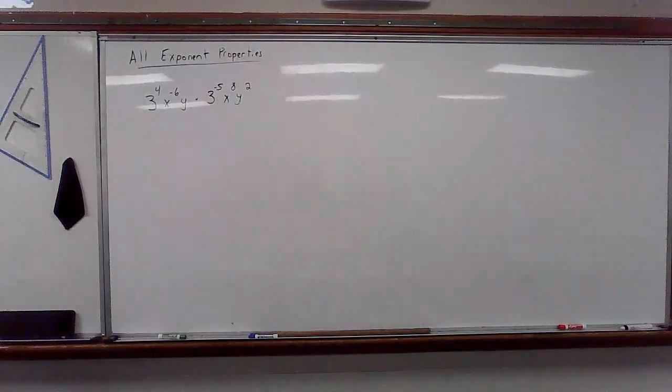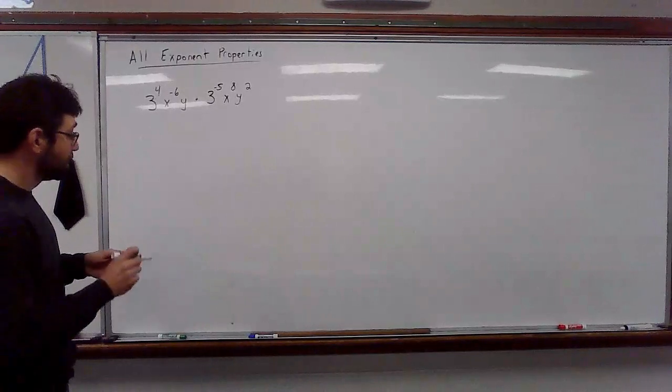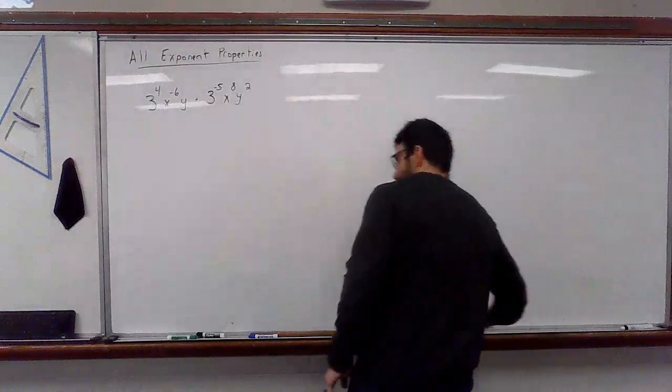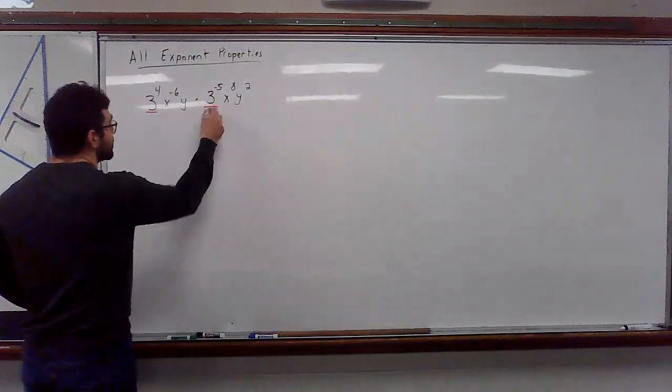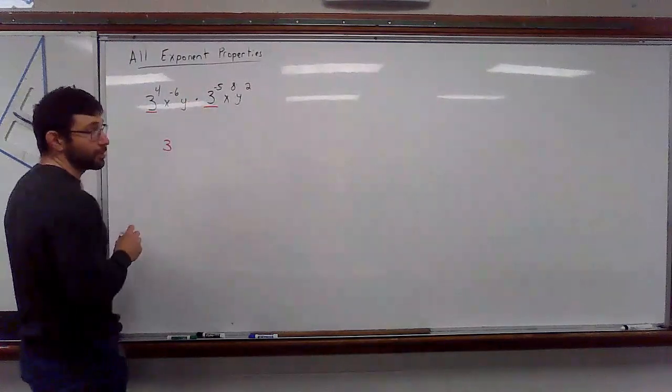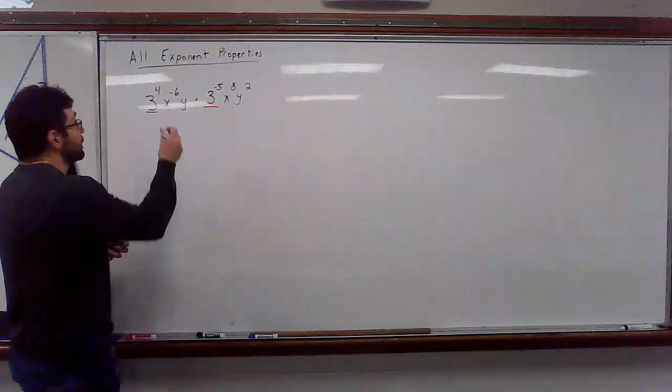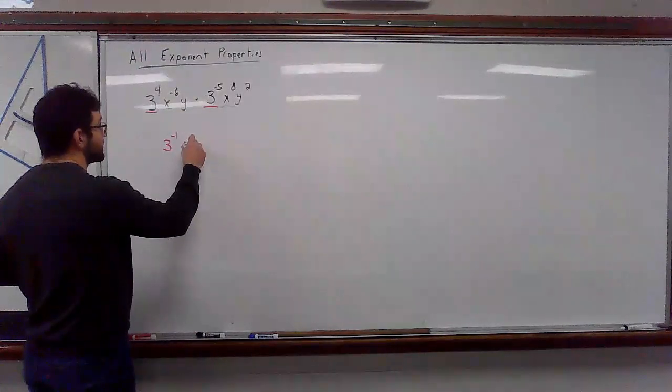So this is still multiplying like bases, except now we're adding in those negative exponents. So I'm going to get several different colors here to make this a little bit easier. Let's start with our like bases. So we've got our exponents. Four plus negative five is negative one.